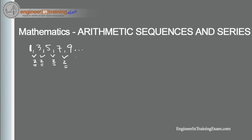The general term of any arithmetic sequence is: a_n = a_1 + (n - 1) * d, where a_1 is the first term of the sequence and d is our common difference. Let's look at an example — find the first, second, third, and tenth terms of the arithmetic sequence defined as a_n = 3 + (n - 1) * (1/2).